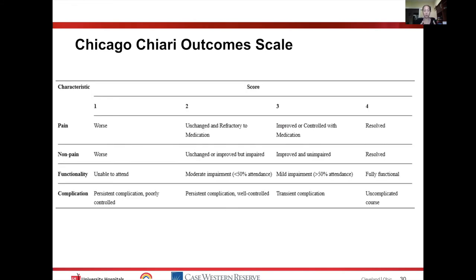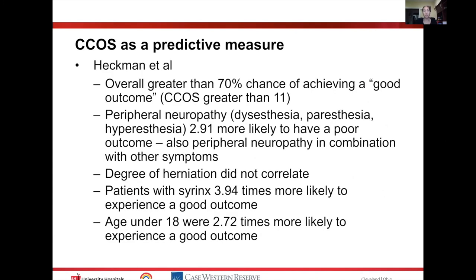A score of 1 in pain and non-pain symptoms corresponds to worse post-operative status, while higher scores reflect unchanged, improved, or completely resolved symptoms. For functionality, scores range from unable to attend school or work, through moderate and mild impairment, to fully functional. For complications, persistent complications receive the lowest score and no complications receive the highest.